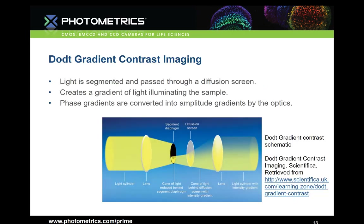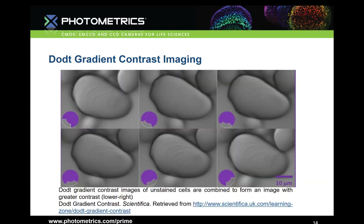Dot gradient contrast imaging also improves contrast in the edges and fine details of cells. Incoming light is first segmented by going through a special aperture in the light path. That segmented light then passes through a diffusion screen that refills the illumination path but creates a gradient of light, where one side has a majority of the light and that tapers off to be less intense on the other side. Successive images are taken by rotating the unit, illuminating different features in one image that are lost in another. This is an example of what dot gradient contrast imaging can look like.